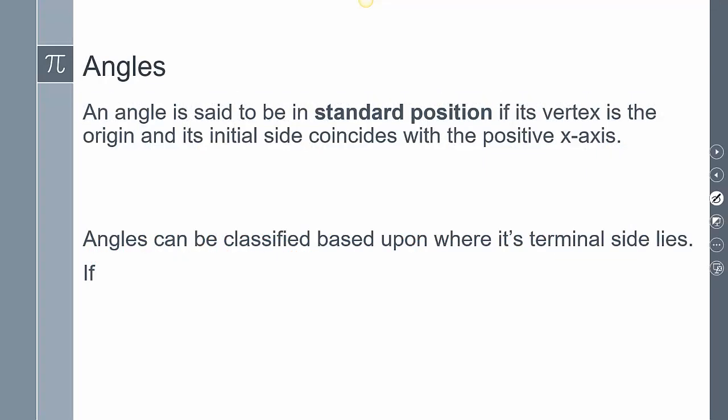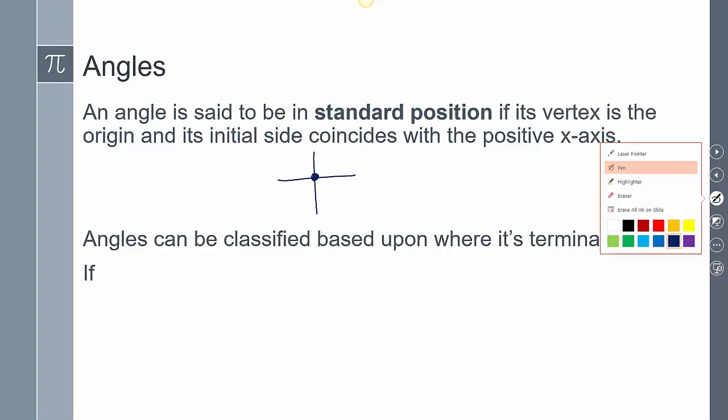An angle is in standard position if the vertex is on the origin and its initial side coincides with the positive x-axis. We can classify those angles based upon where the terminal side lies.